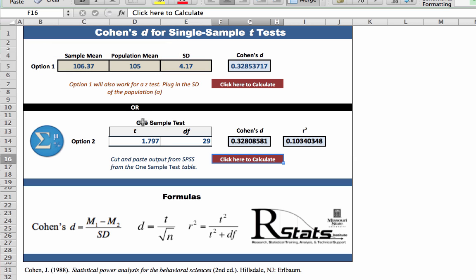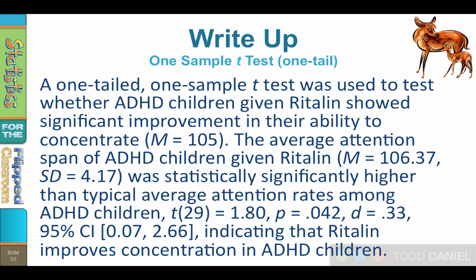And here is how we would write up these results in APA style. A one-tailed, one-sample t-test was used to test whether ADHD children given Ritalin showed significant improvement in their ability to concentrate. We concluded that the average attention span of ADHD children given Ritalin was statistically significantly higher than the typical average attention rates among ADHD children, indicating that Ritalin improves concentration in ADHD children. Our t with 29 degrees of freedom was a 1.80. Probability is 0.042. Cohen's d, 0.33, and our 95% confidence interval ranged from 0.07 to 2.66.